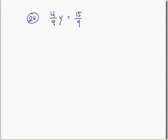So the reciprocal of four ninths is nine fourths. So if we multiply this side of the equation by nine fourths, and what you do to one side of the equation, you do to the other.